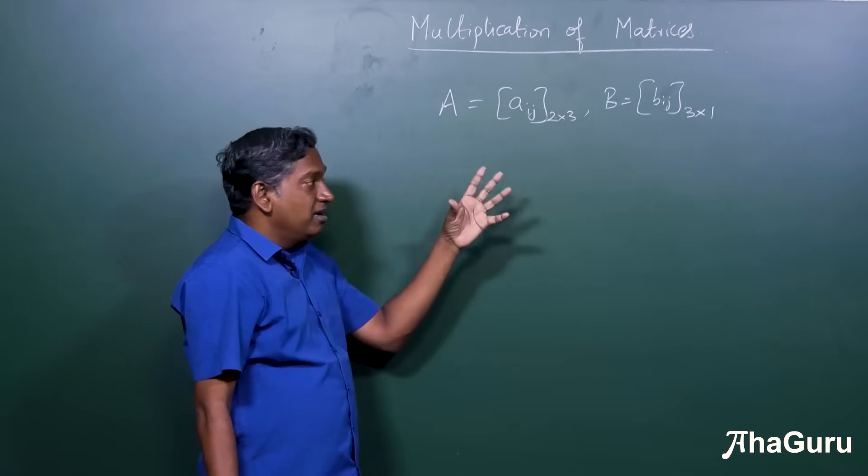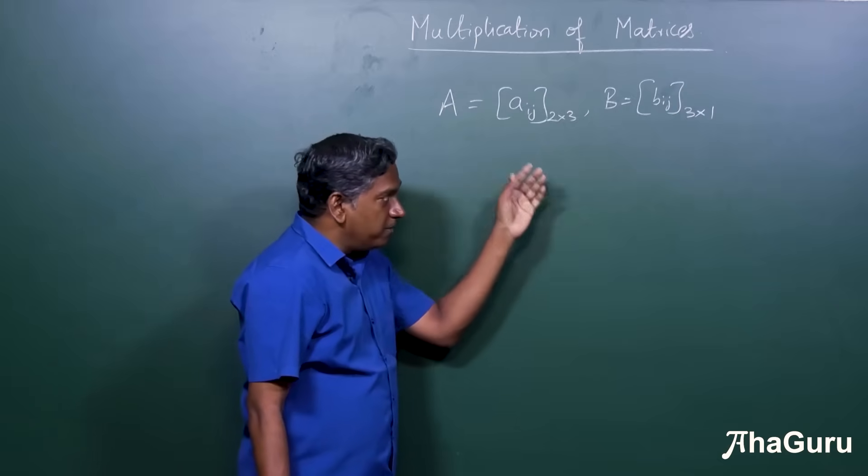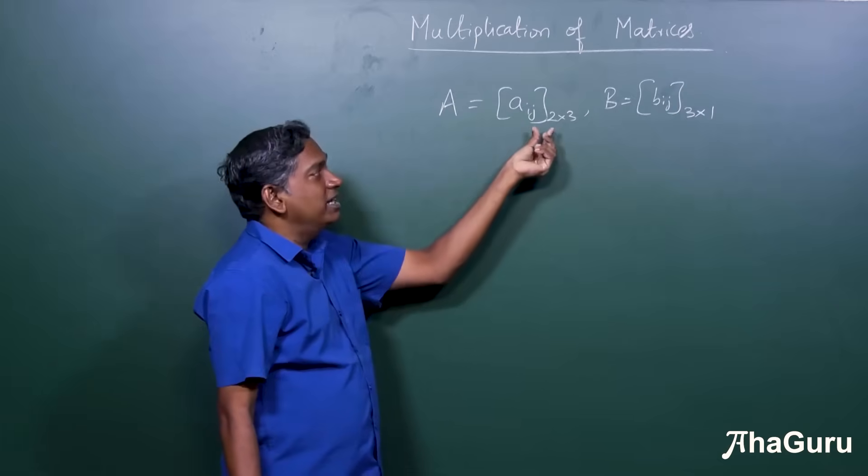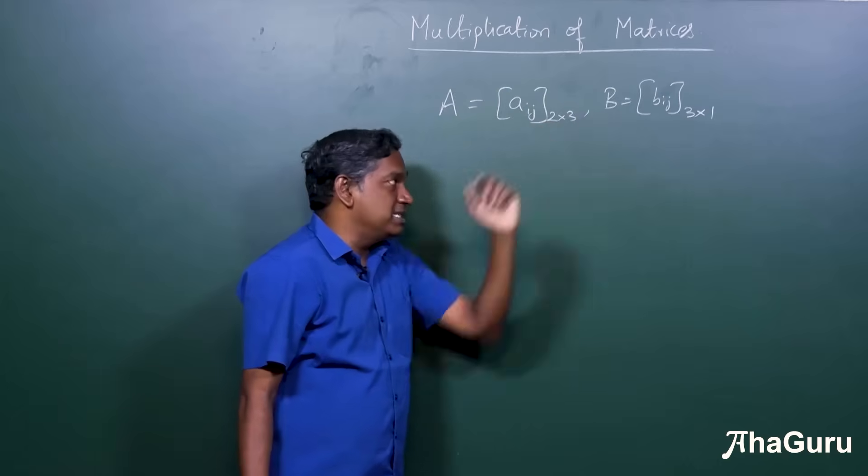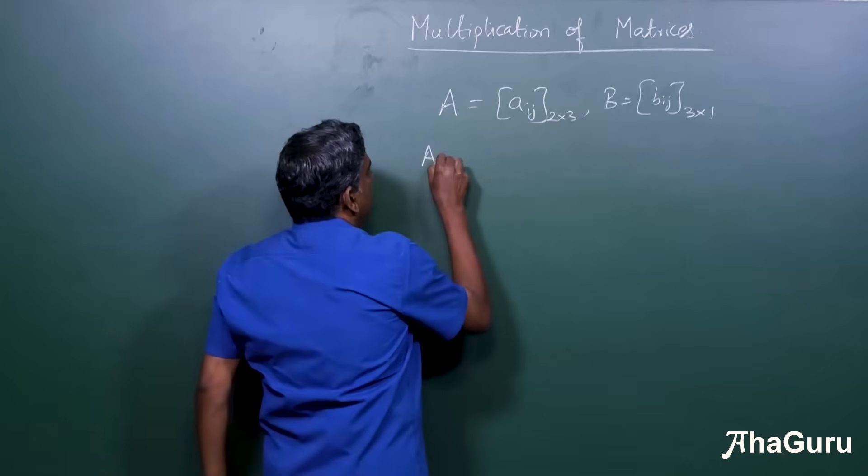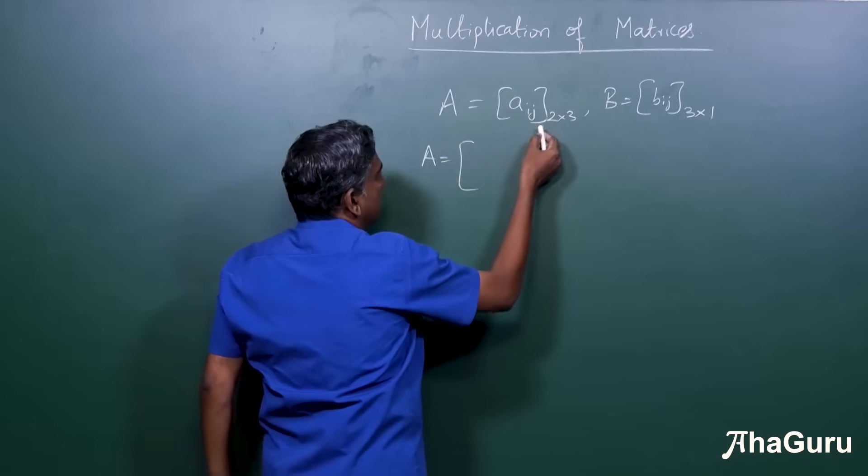Now, before I give the general formula, it's good to understand with a simple, specific example. Now, so A is, let's say I'll take an example, 2 by 3 matrix.